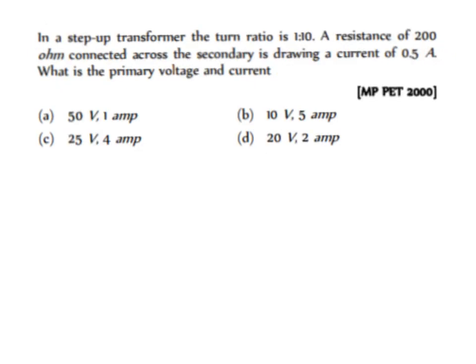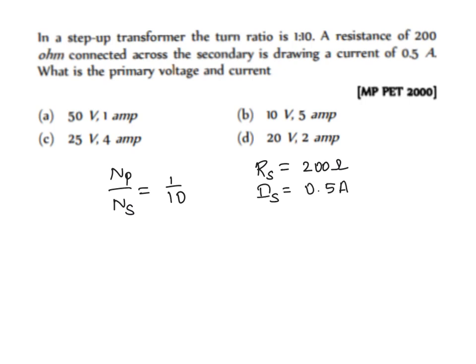The next problem: in a step-up transformer, the turn ratio is 1:10, meaning NP/NS = 1/10. A resistance of 200 ohm is connected across the secondary, so RS = 200 ohm. The current in the secondary IS = 0.5 ampere. The question asks us to find the primary voltage VP as well as the primary current IP.